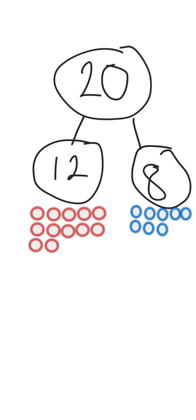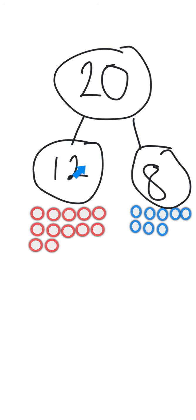Let's have a look at this again but from this example. Here we've got 20 — altogether we have 20 skittles but that's made up of two different parts. We've got 12 red skittles and 8 blue skittles. So one part of the number 20 is 12 and another part is 8. 20 is made up of 12 and 8.